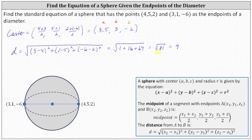Remember, this is the length of the diameter and we need the length of the radius. Since the radius equals half the length of the diameter, the radius equals the diameter divided by 2, which is 9 divided by 2, or 4.5.